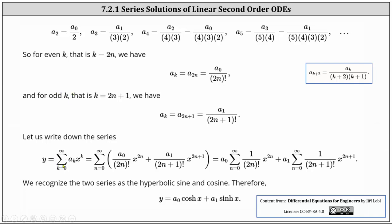We write down our solutions using the formulas for the coefficients for even and odd k in terms of n. We have y equals a sum from k equals zero to infinity of a sub k times x to the power of k, which equals the sum from n equals zero to infinity of a sub zero divided by two n factorial times x to the power of two n, plus a sub one divided by two n plus one factorial times x to the power of two n plus one. This is our power series solution, which we break into two power series, factoring out a sub zero from the first and a sub one from the second.